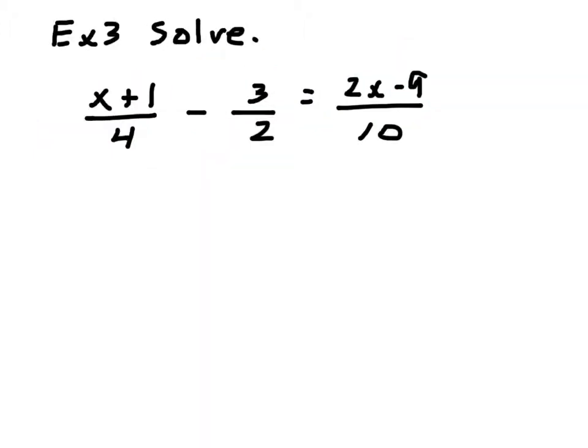Alright, final example. Now, this one's a little different than the other two, because I do have a couple in the tops of two of the fractions. But we're still going to do this the same way. So, I'm going to multiply every term by the least common multiple of 4, 2, and 10, which would be 20. Or, in other words, 20 over 1. Alright, now,